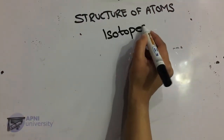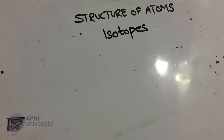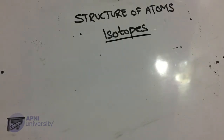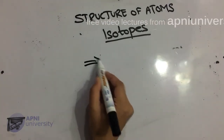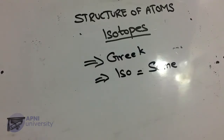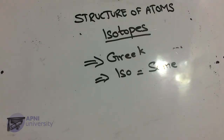The next topic is isotopes. The word isotope is derived from Greek — ISO means same. Isotopes are different elements of the same element which have the same atomic number but different atomic masses. This phenomenon is called isotropy.